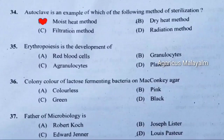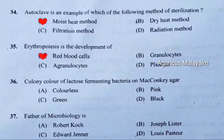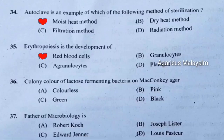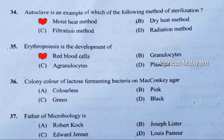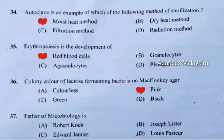Thirty-fifth question: Erythropoiesis is the development of. Correct answer is option A — red blood cells. Thirty-sixth question: Colony color of lactose-fermenting bacteria on MacConkey agar. Correct answer is option B — pink. Thirty-seventh question: Father of microbiology is. Correct answer — Louis Pasteur.